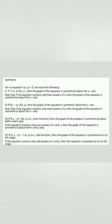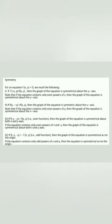First case: if f(−x, y) = f(x, y), then the graph of the equation is symmetrical about the y-axis. For example, y = x² — whether x is negative or positive, the values are the same because the power is even. So, if the equation contains only even powers of x, then the graph is symmetrical about the y-axis.